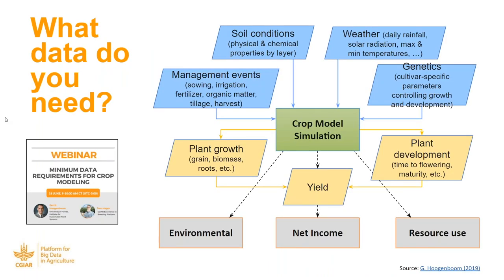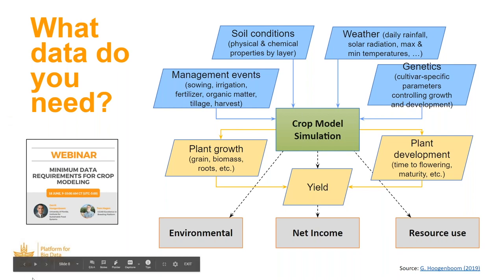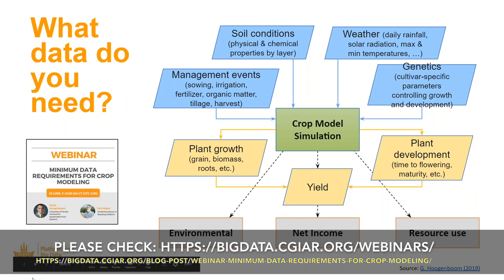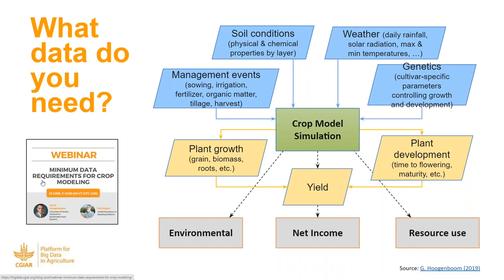So what data do you need for crop modeling? As Annabel mentioned, we started this webinar series last year with Gary and Tom presenting minimum data requirements for crop modeling — if you missed that webinar it's still available to rewatch from the big data platform website. I borrowed this slide from that presentation. There are mainly four buckets of input data: soil conditions, weather data, genetics like variety characteristics, and management events such as planting, irrigation, and fertilizer. Those four areas are where we think secondary data may be able to help fill the gap.